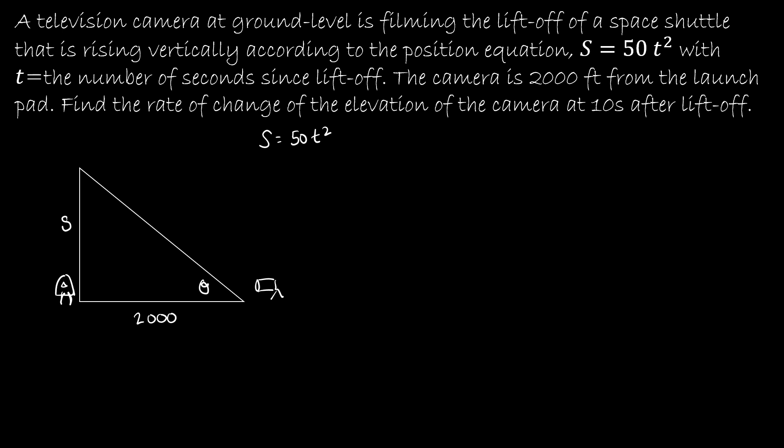We're going to call this side of the triangle S because that's the height of the rocket, where t is the number of seconds since liftoff. The camera is 2000 feet from the launch pad. Find the rate of change of elevation of the camera. That's why this one's tricky—we've got theta, and they're asking us to determine dθ/dt.